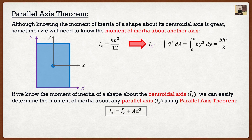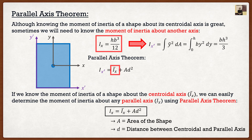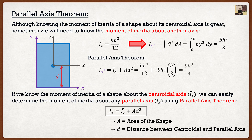Now, A is the area of our shape — for a rectangle it's base times height — and d is the distance between the two axes. Applying this to the example above, the moment of inertia about x prime equals the moment of inertia about the centroidal axis, which is base times height cubed divided by 12, plus A times d squared. A is base times height, and d is h over 2, since the centroid is located at h over 2. Substituting everything in, we arrive at base times height cubed divided by three — and we didn't need any integration.